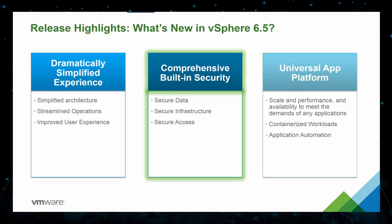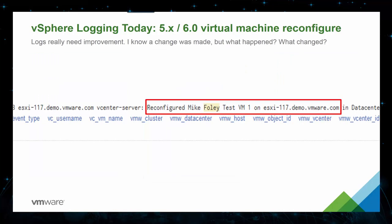The second category in what's new in vSphere 6.5 that we're discussing covers comprehensive built-in security. We've accomplished this by securing not only the data, but the infrastructure and access as well. Today in vSphere 6.0 Update 2 and below, vSphere logging doesn't provide you with an overly detailed amount of information to assist you in troubleshooting. In the current and older versions, when I make a change to a virtual machine, I only get a "Mike fully reconfigured this VM" type of message, as you see in the red box here. The problem is that this information is not actionable, so I can't use it to my advantage.